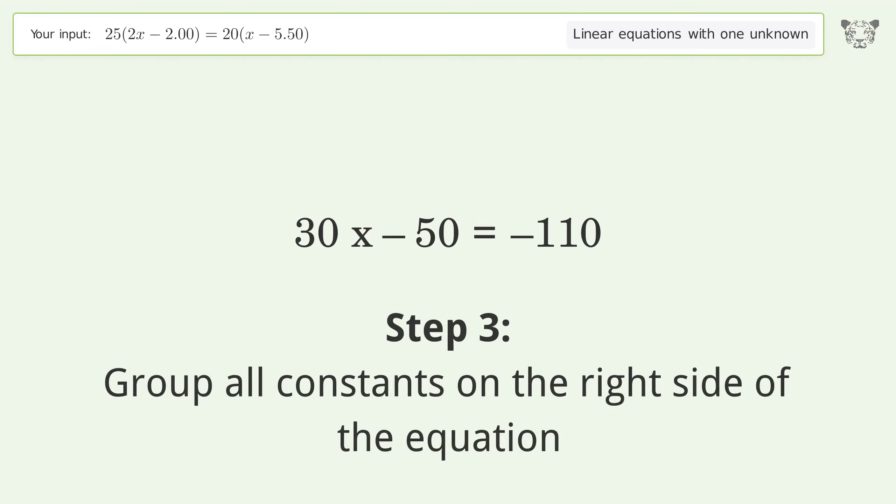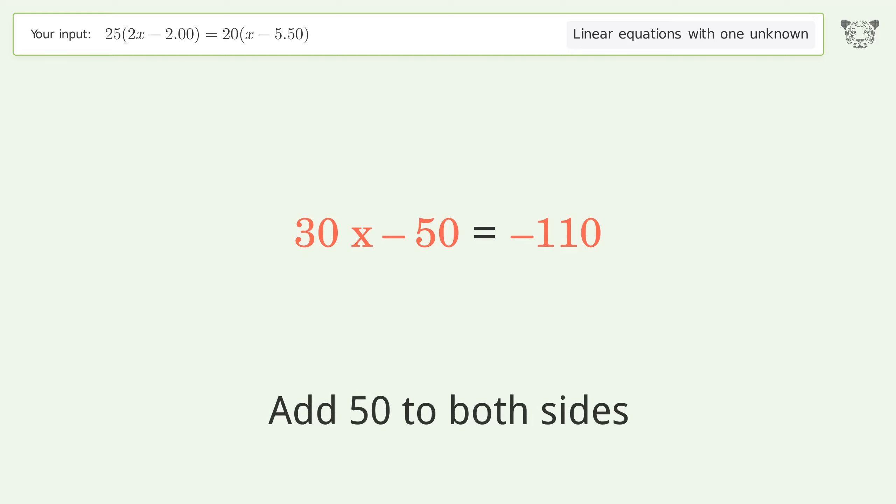Group all constants on the right side of the equation. Add 50 to both sides and simplify the arithmetic.